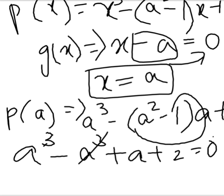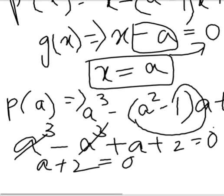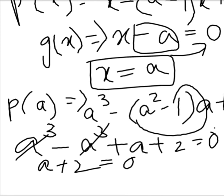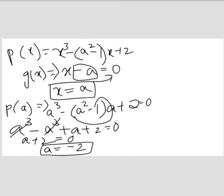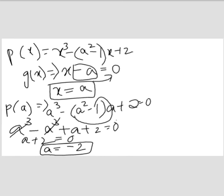A³ - A³ gets cancelled. And A + 2 = 0. Finally, plus 2 goes to RHS and becomes minus 2. So A = -2. We just have to put A wherever you find x. That's all, we got the answer. We have completed 5th and 6th.